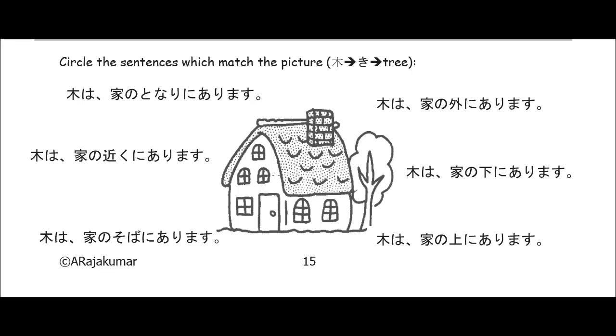Let's do the examples together so that you can correct your work — you should have already done this for yourself. We need to know this kanji here. It looks just like a tree. It's pronounced ki and it means tree.